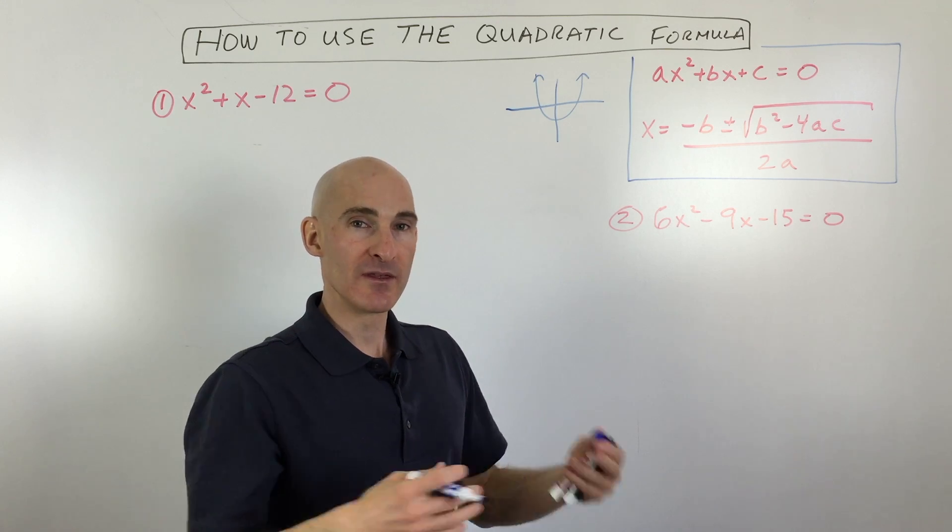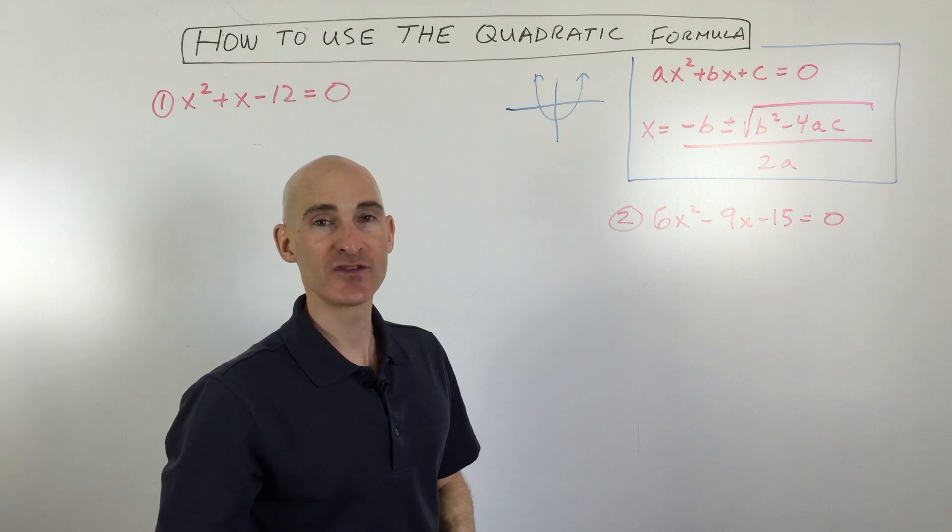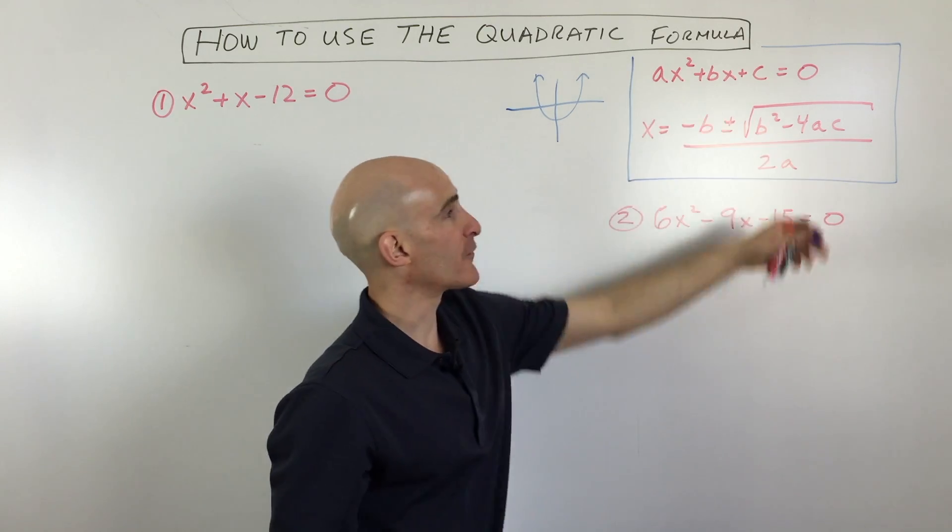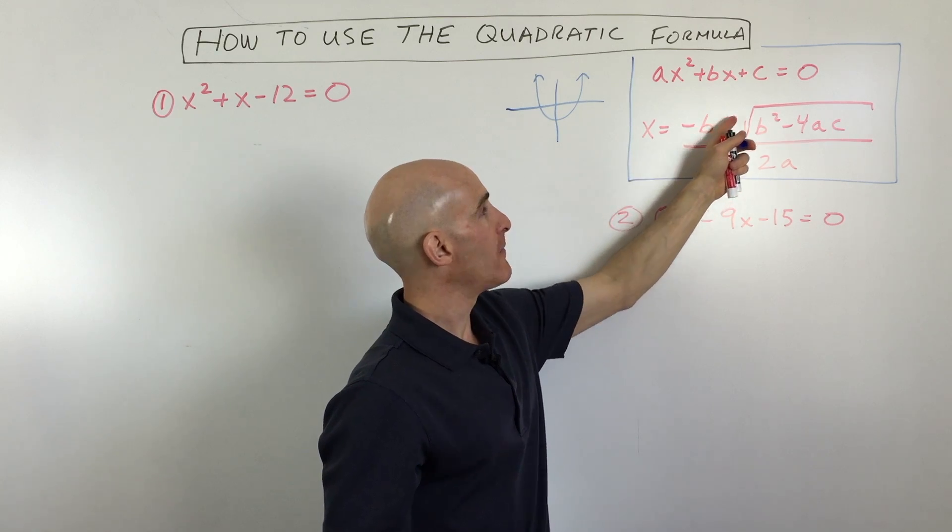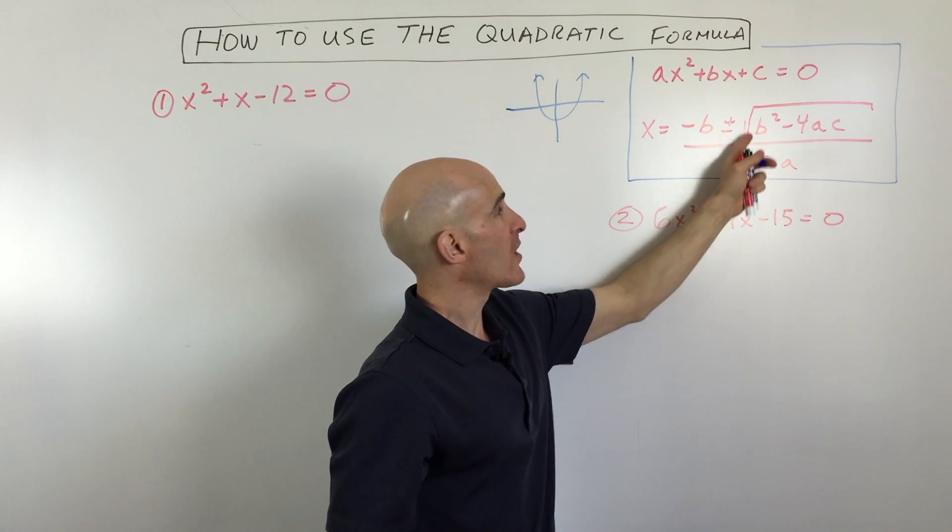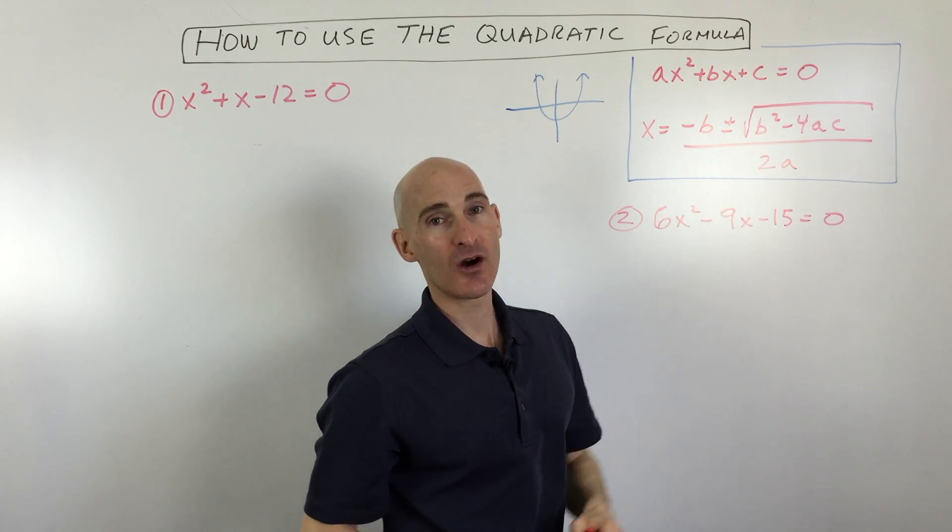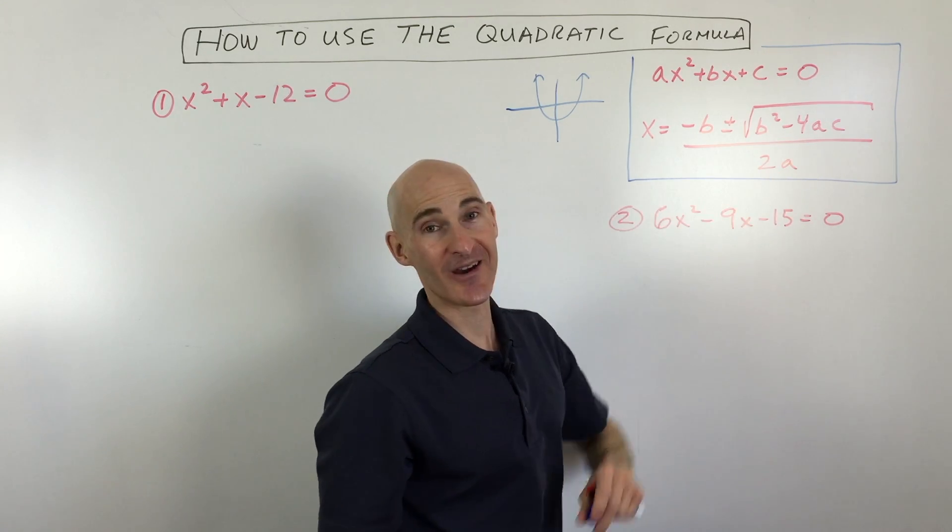And so this is another possibility that you can use to solve these equations, and it's called the quadratic formula. And so you can see here it's x equals negative b plus or minus the square root of b squared minus 4ac all divided by 2a.